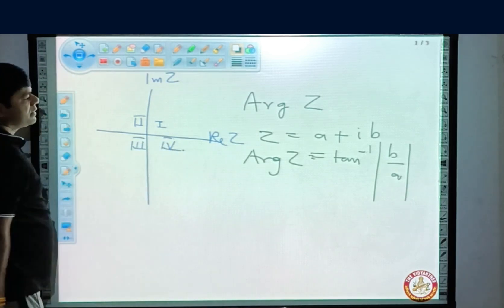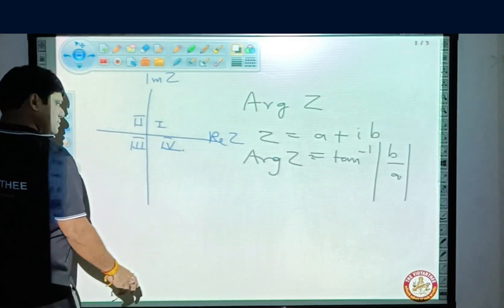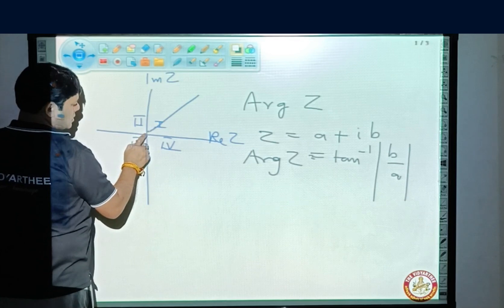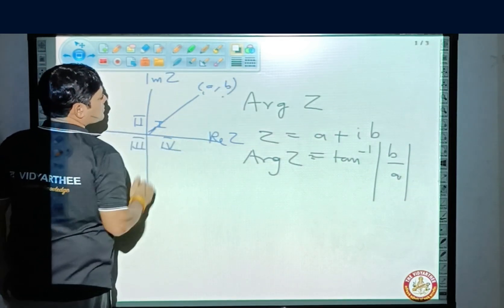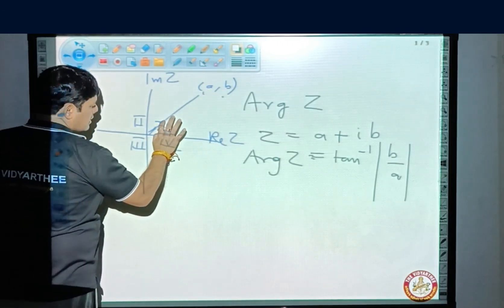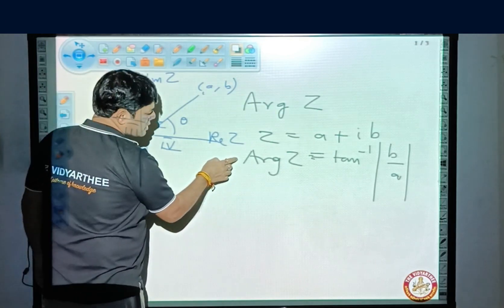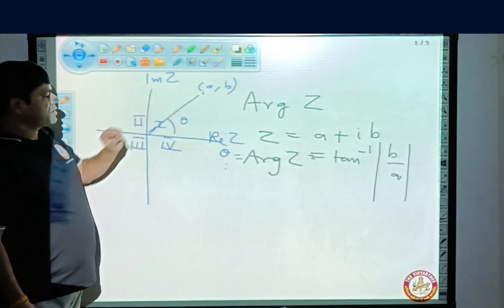and this is your fourth quadrant. The value of the argument depends on the quadrant. If this is the first quadrant, suppose this is your complex number represented by point a, b. Then this is the argument. Argument is basically theta if it is in the first quadrant.